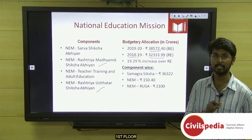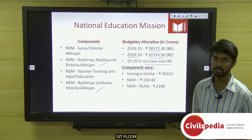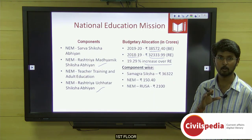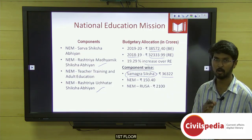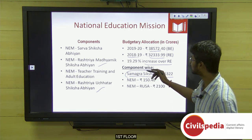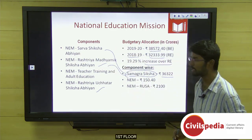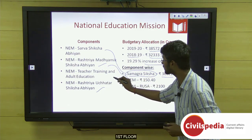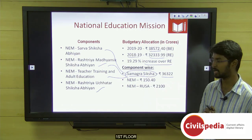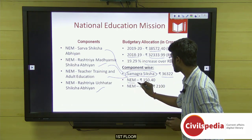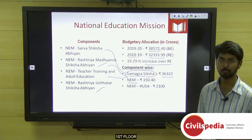The previous year's allocation was around 32,300 crores and this year it is around 38,572 crores — almost a 19.29% increase over the revised estimate. Component-wise, around 36,300 crores has been allocated to the Samagra Siksha component, which consolidates SSA, RMSA, and the teacher training sub-component. For the remaining components it is 150 crores, and for Rashtriya Uchatar Siksha Abhiyan it is 2,100 crores.